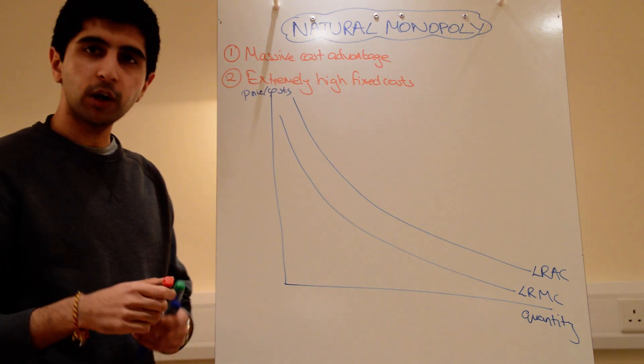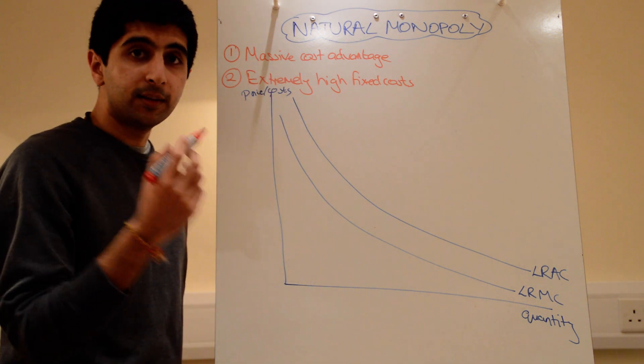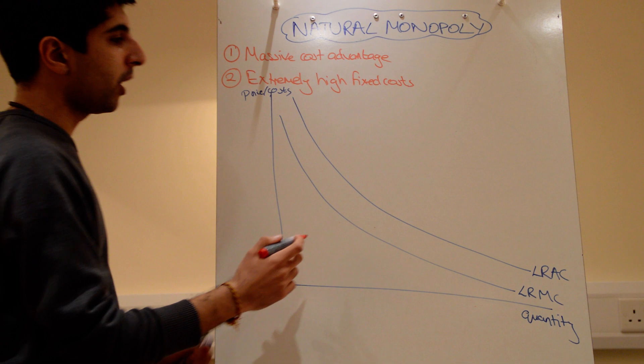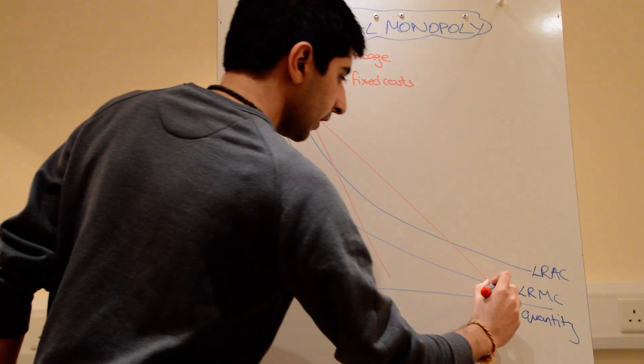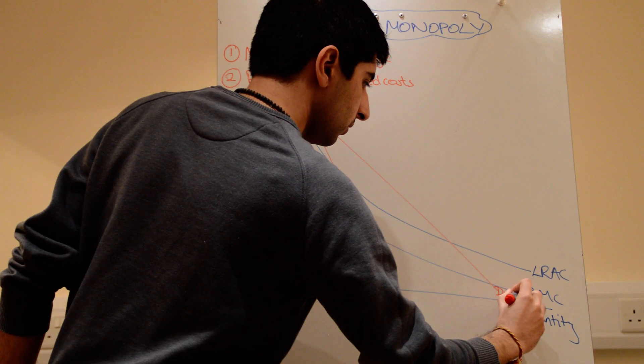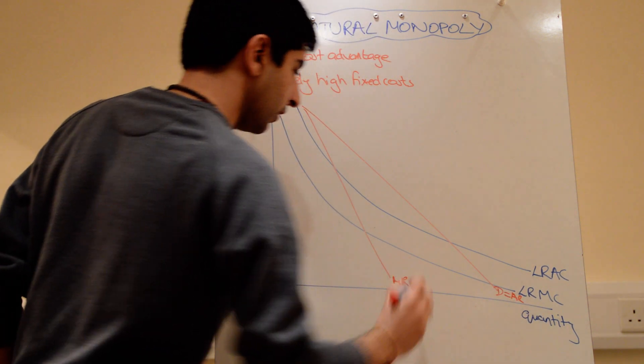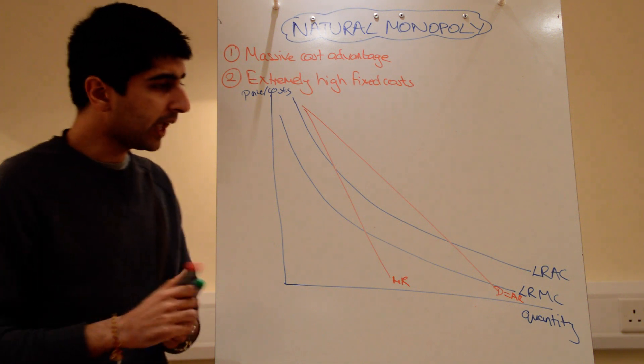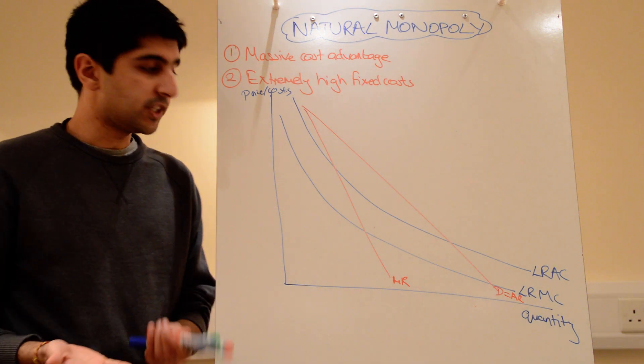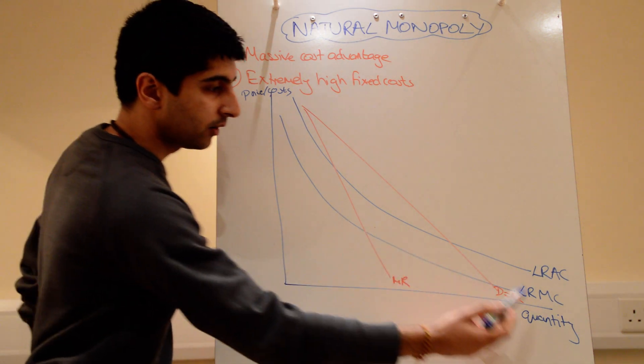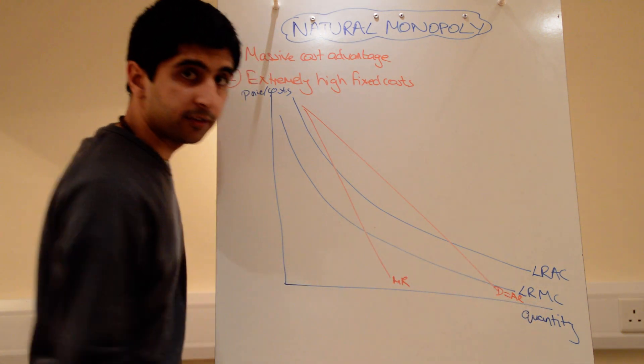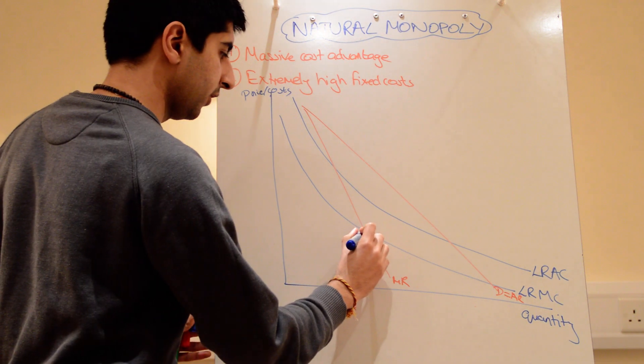If we look at conduct, we'll go in the normal way. Let's draw our demand curve, our average revenue and marginal revenue curves. So there's demand, which is average revenue, and there's our marginal revenue. We're back to a normal monopolist situation here. A monopolist will want to profit maximise to produce where MR is equal to MC. And that occurs at this point here.